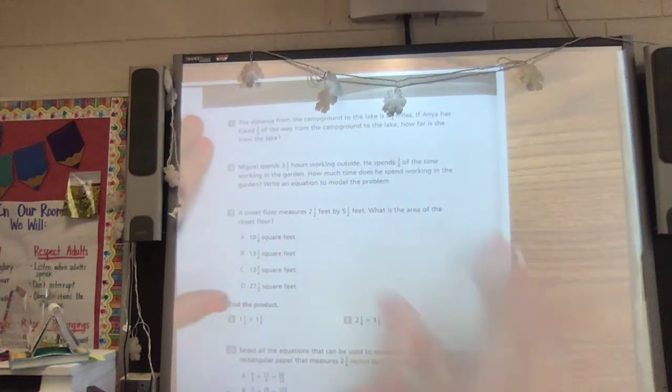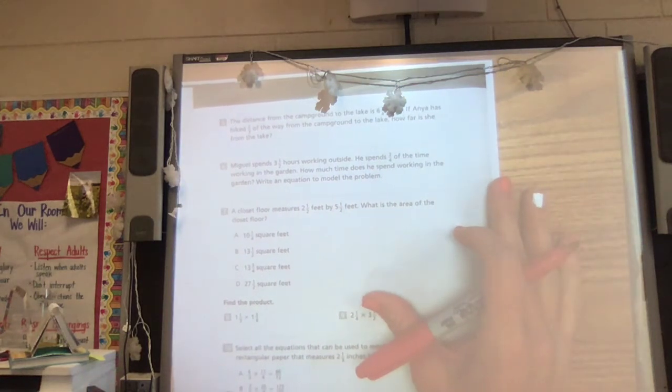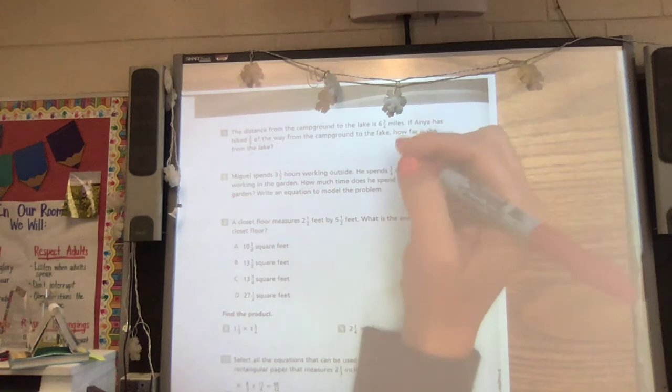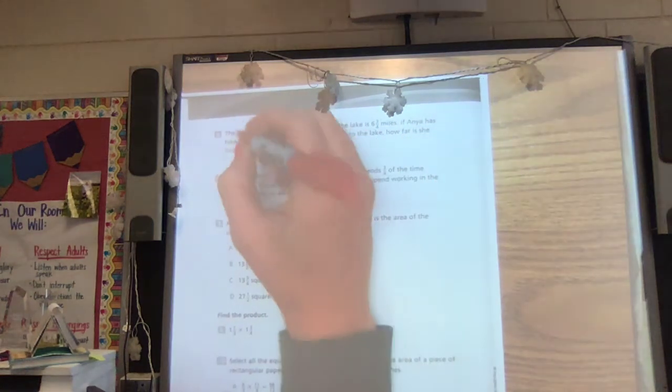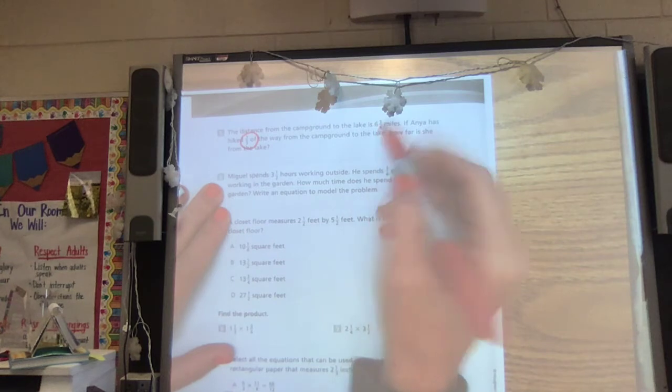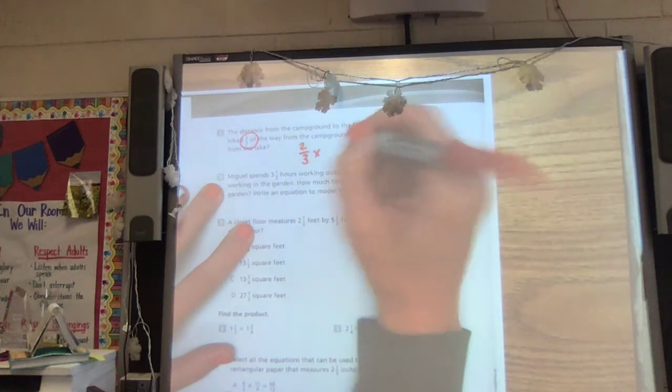Let's look at the next page, number five. The distance from a campground to the lake is six and three fourths miles. If Anya has hiked two thirds of the way, how far is she from the lake? She's done two thirds of that distance, so she hadn't done it all. So we're going to find two thirds of six and three fourths.